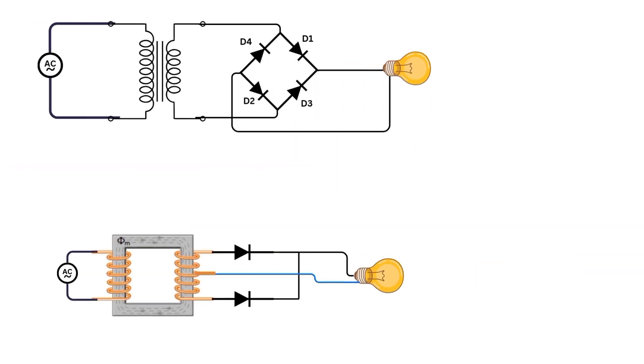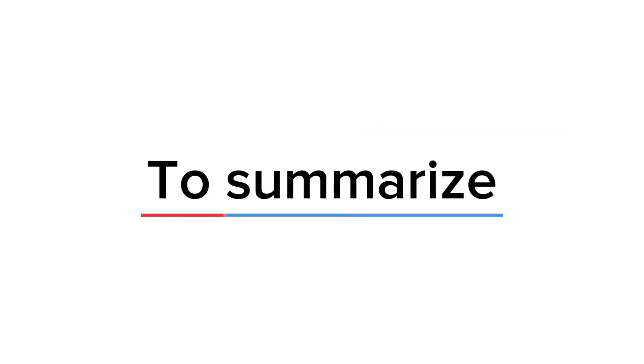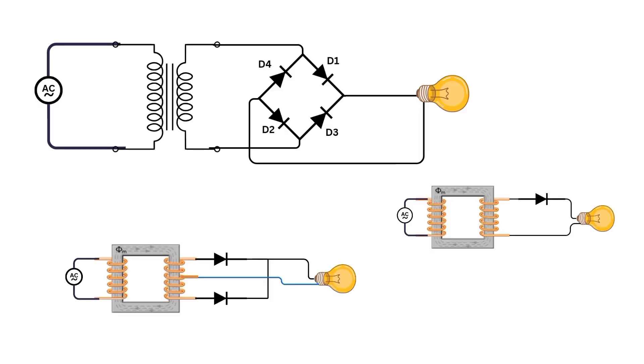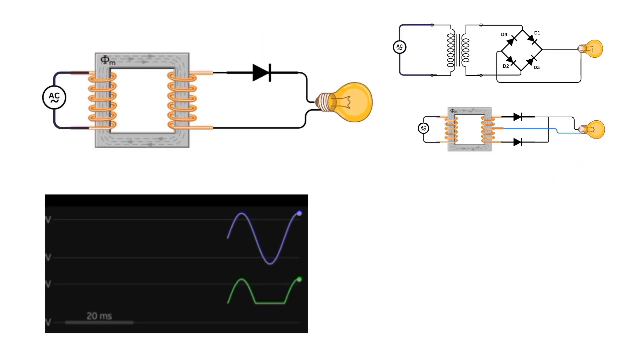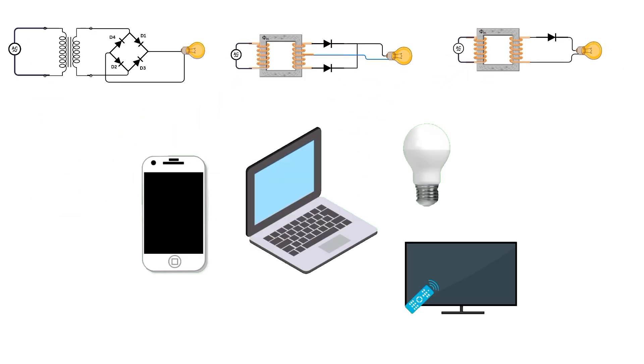Both types of full wave rectifier circuits offer advantages over the half wave rectifier, including higher efficiency and smoother DC output. To summarize, rectifier circuits are essential for converting AC to DC. The half wave rectifier rectifies only the positive half of the AC sine wave, while the full wave rectifier rectifies both halves, resulting in a smoother DC output. These circuits enable us to power electronic devices that require a stable DC supply.